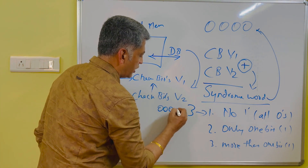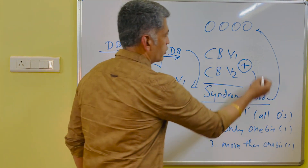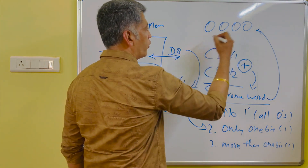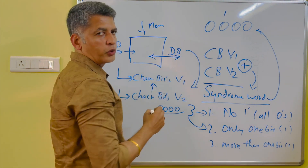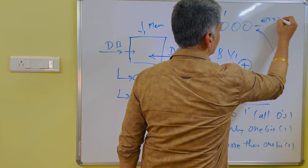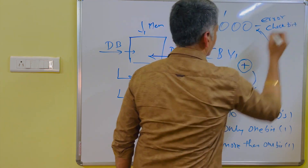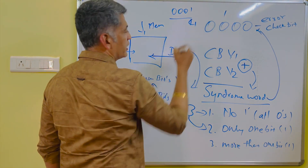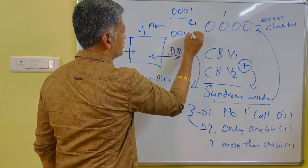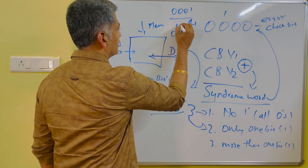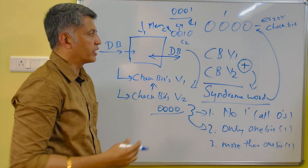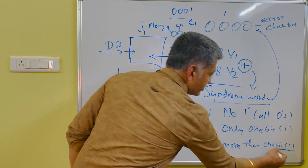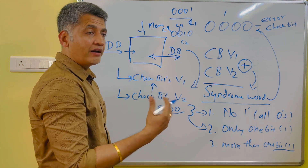If the syndrome word has all 0s, there is no error in the data bit. If only 1 bit out of the 4 is having 1, that means there is an error in the check bit. For example, if I have 0, 0, 1, 0 — this is called check bit 2. Then check bit 4 and check bit 8 follow accordingly. But if more than 1 bit is holding the value of 1, then there is an error with the data bits.